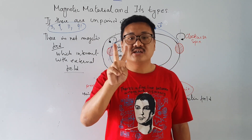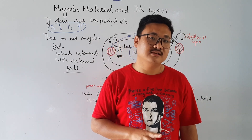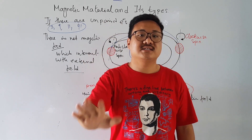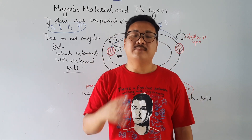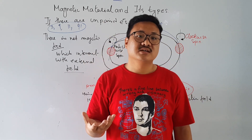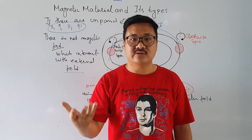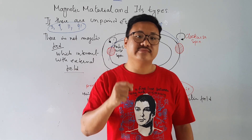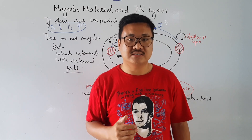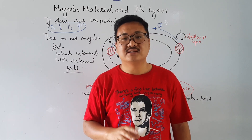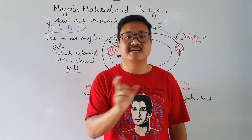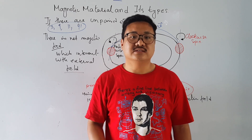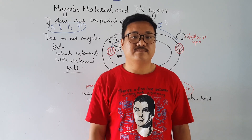Mainly there are three types of magnetic material: paramagnetic, diamagnetic, and ferromagnetic. Apart from these, there is also anti-ferromagnetic, hard ferromagnetic, and soft ferromagnetic. But we only study diamagnetic, paramagnetic, and ferromagnetic material, which we will cover in the next lecture.